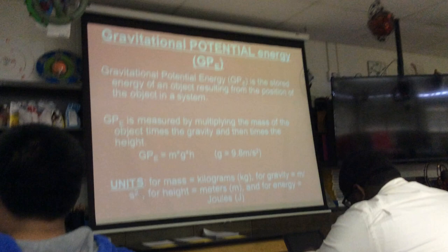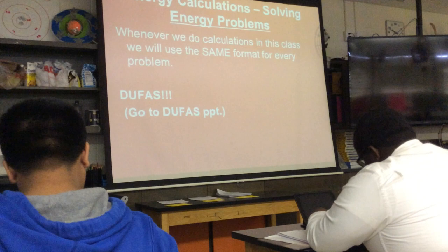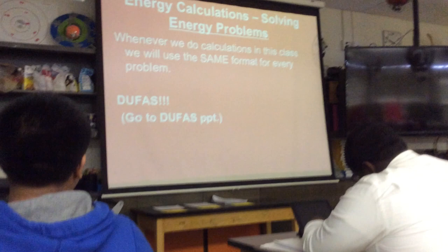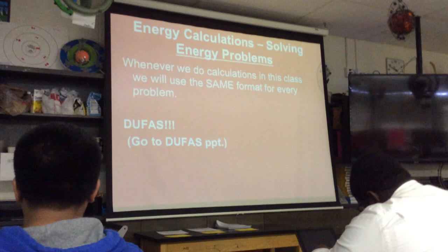Now we need to talk about how we're going to go about these calculations. We are always going to use DOOFUS. Take out your DOOFUS notes and fill this in — don't write this on notebook paper. Write it in your DOOFUS notes, which will be number 59 in your binders.